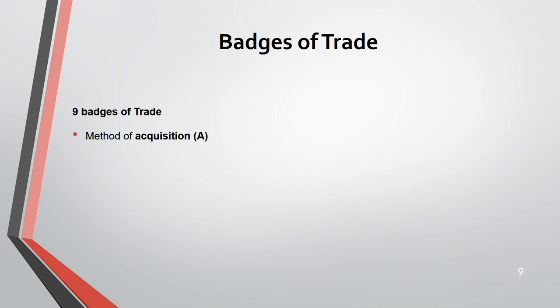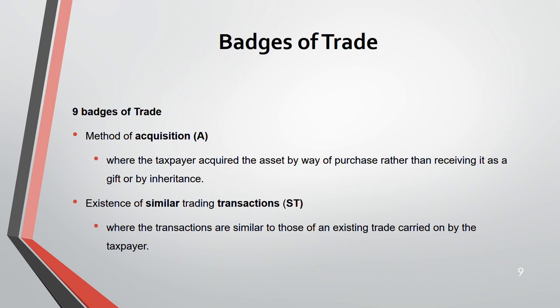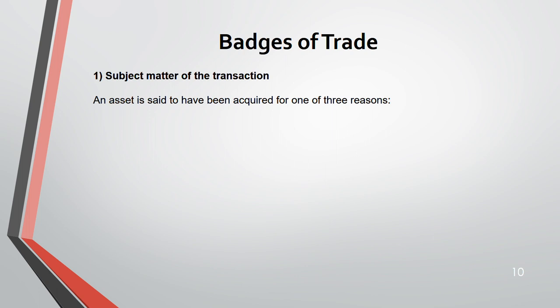The remaining badges are: Reason for sale — a forced sale just to raise cash is not trading; Motive — a profit motive indicates trading; Finance — if you are repaying a loan from the proceeds of a sale, that is a sign of trade; Method of Acquisition — purchasing is more indicative of trade than receiving a gift or inheritance; and Similar transactions — if a new transaction is similar to your existing trade, it is likely trading.